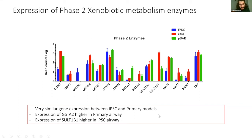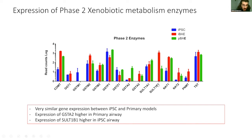We looked at the Phase II xenobiotic enzymes, and this time they are very similar to each other. GSTA-2 is the only one which is expressed in the primary but not in the IPSC model. But on the contrary, SULT1B1, for example, is higher than the primary, and it also expresses PNMT.